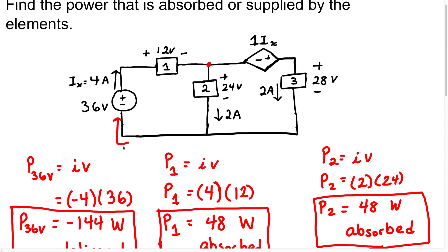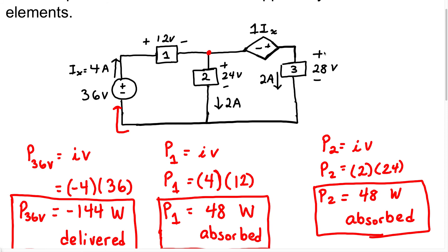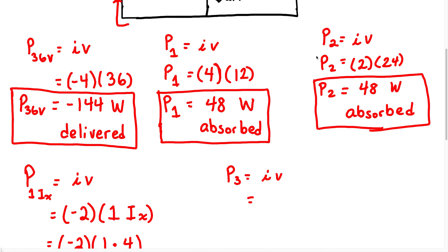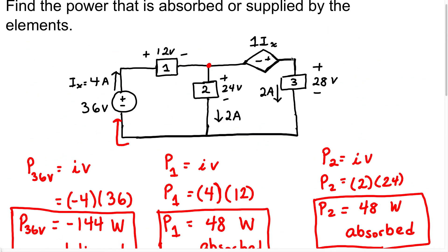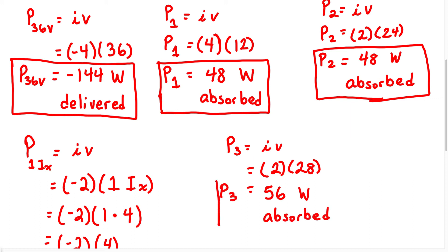We have one more element, which is element 3. The power in element 3 equals IV. The current flowing through this element is 2 amps, and it's positive because it flows through the positive terminal. The voltage is 28 volts. So when you solve for this, that gives 56 watts. Because it's a positive power, element 3 is absorbing power.